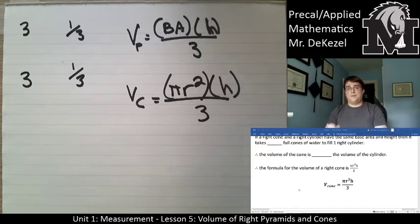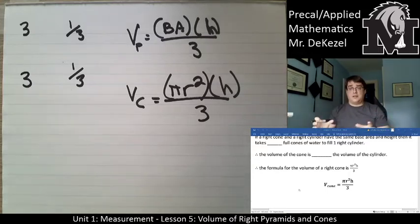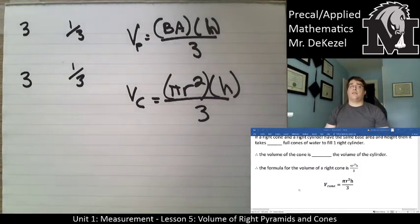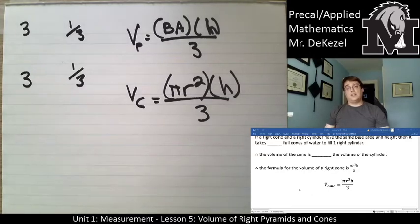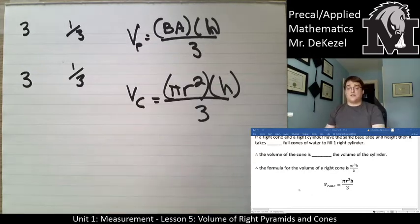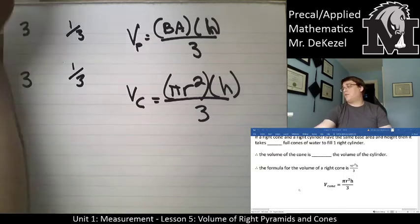There are puzzles you can do that put different pyramids together to show they make a cube, but it is one-third the volume of either the prism or the cylinder. That makes it really easy for us to do problems now that we have these two equations, so let's go to the examples.